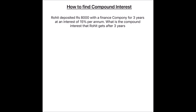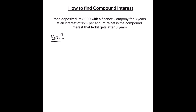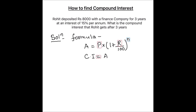This question is from Class 8 Math Adi Sharma book, Exercise 14.4, Question 3. Let's start with the solution. The formula we are going to use is: Amount equals P times (1 plus R divided by 100) whole raised to power N. First we are going to find the amount, and then compound interest equals amount minus principal.